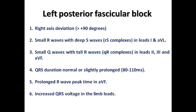The similarities between left posterior and left anterior fascicular block include prolonged R wave peak time, slight prolongation of QRS duration, and increased QRS voltage in limb leads. However, the axis is opposite and the morphology of leads I, AVL, and the inferior leads are opposite to left anterior fascicular block. Of course, we must exclude any other cause of right axis deviation before diagnosing left posterior fascicular block.